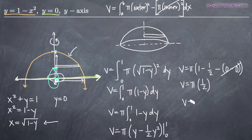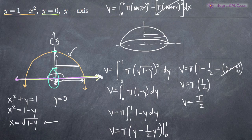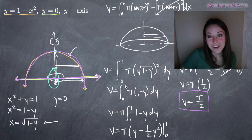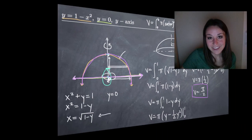After plugging in our limits of integration, we're left with 1 minus 1 half, which is 1 half. So we simply get 1 half times pi, or pi over 2. And that is the volume of this region — bounded by y equals 0 and y equals 1 minus x squared — rotated around the y-axis. The volume of that region is pi over 2. I hope this video helped you, and I will see you in the next one.